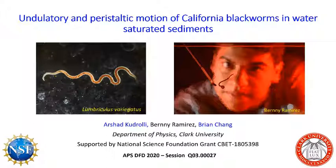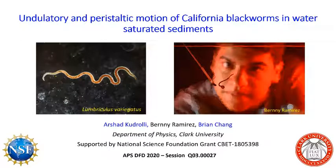Today I'm going to focus on a particular kind of worm — the California black worm, or Lumbricus varicatus, which is found very commonly. A picture of that is on the left, and I'm going to describe the various strokes it uses to move forward in granular materials or in water.